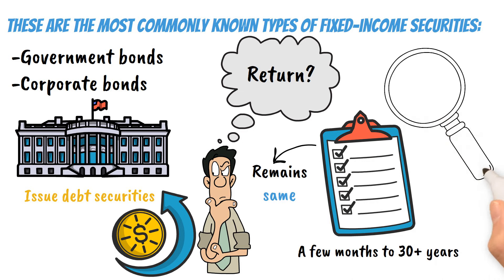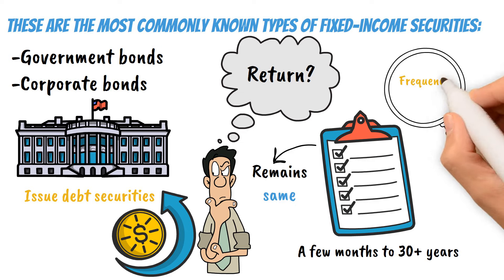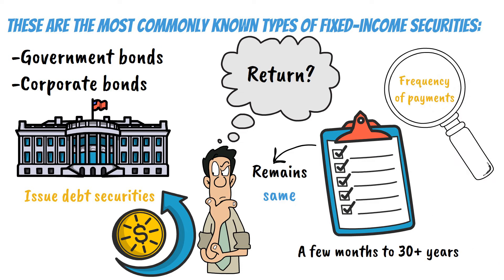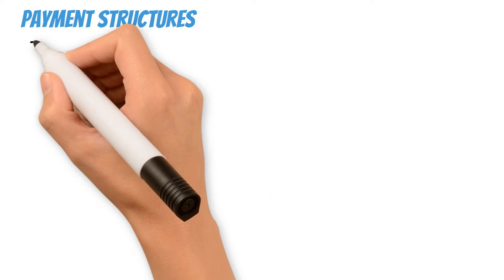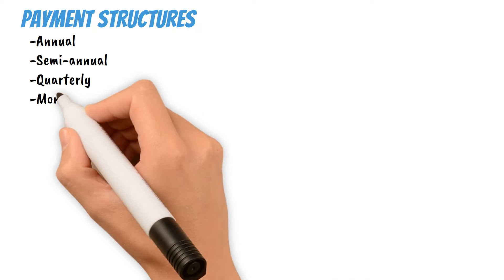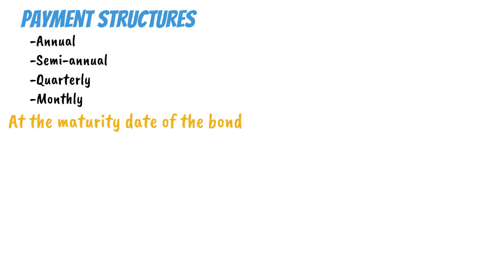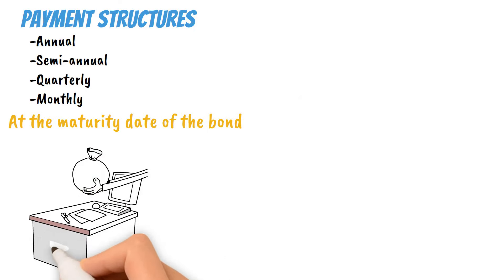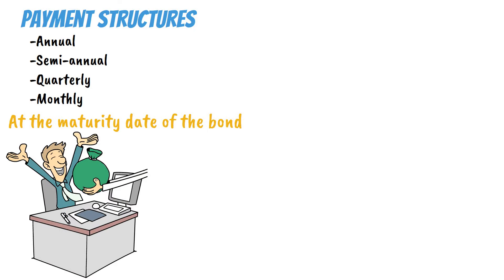Along with the maturity varying from bond to bond, you will also notice how the frequency of payments may differ as well. You will commonly see them having annual, semi-annual, quarterly, and monthly payment structures. At the maturity date of the bond, investors are then repaid the principal amount they had initially invested.